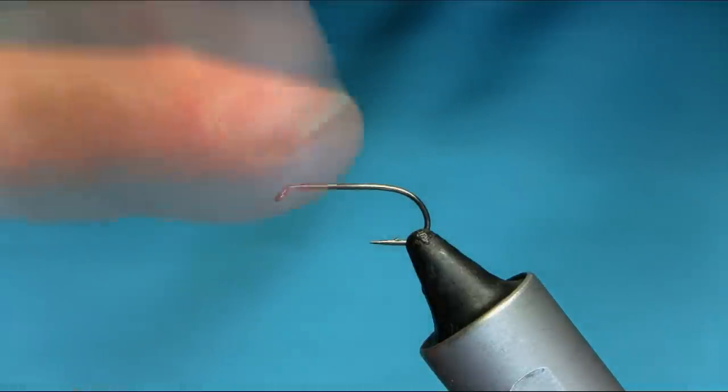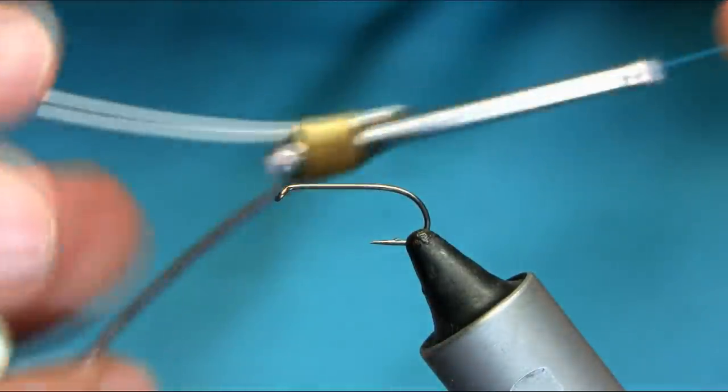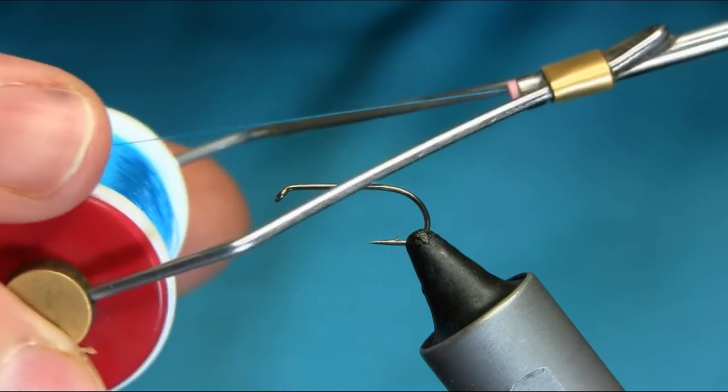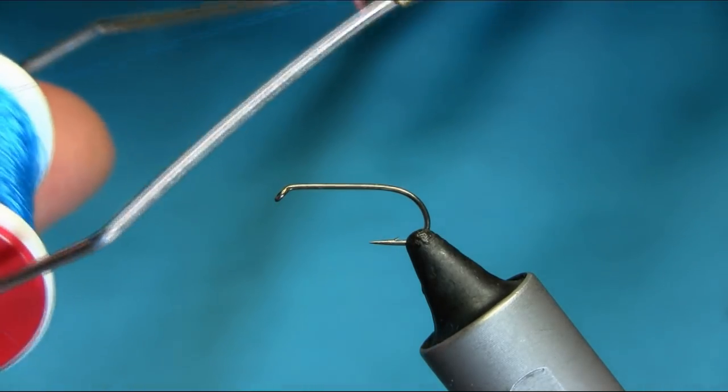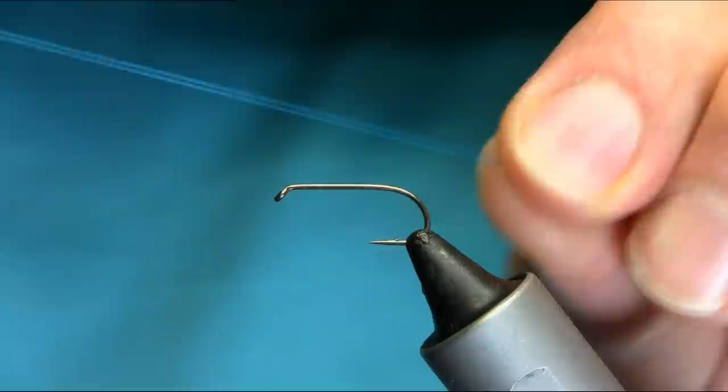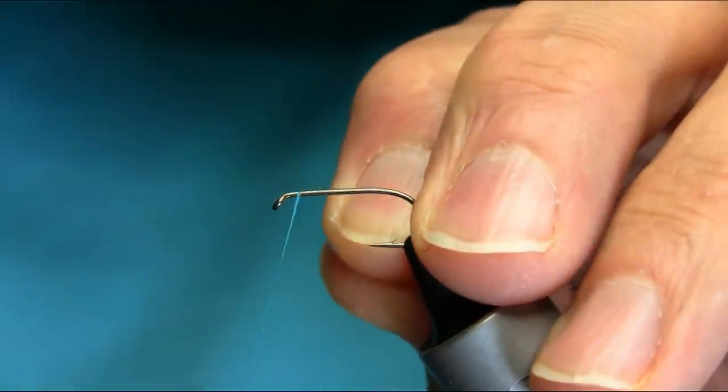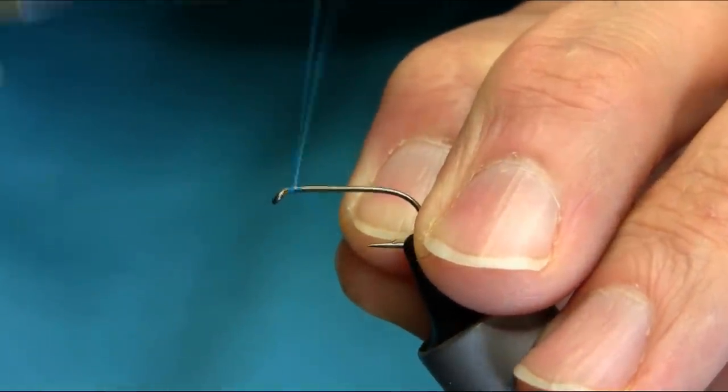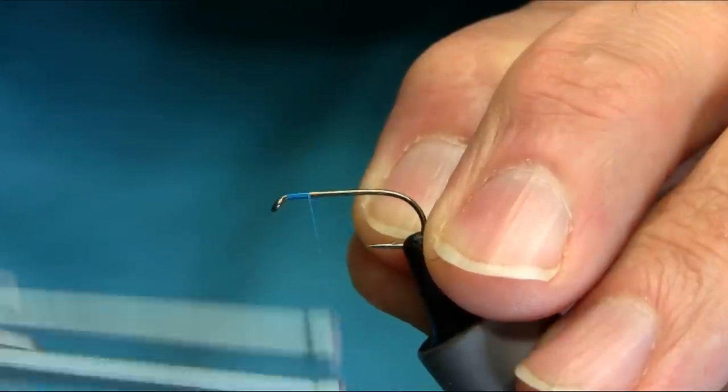Hello everyone, this is size 10 straight shank hook and the thread I'm using is peacock blue. Just start below the eye, touch and turn as usual.